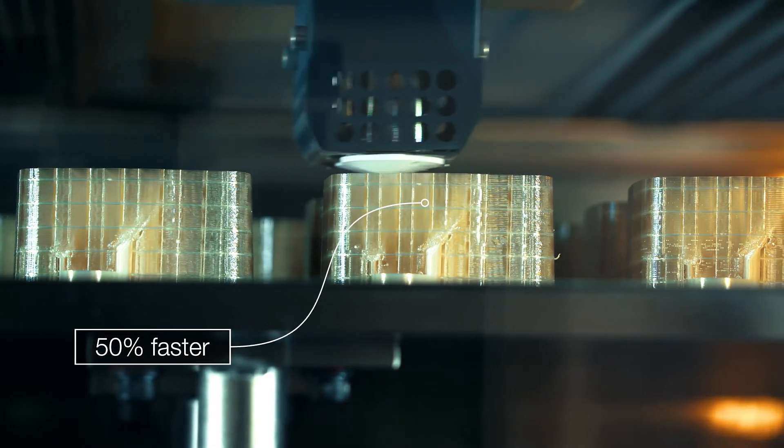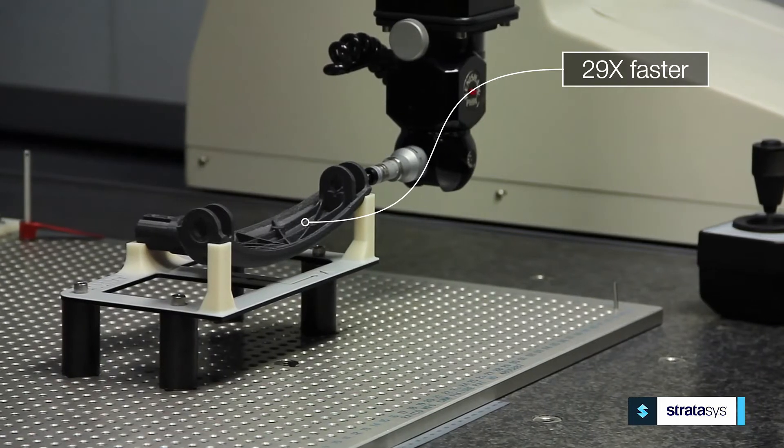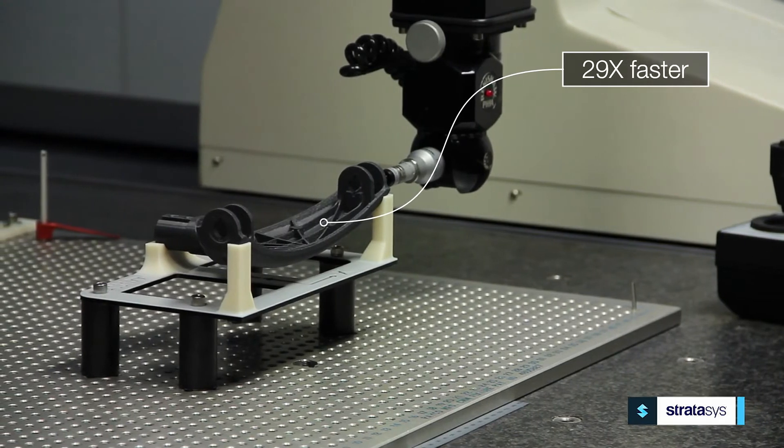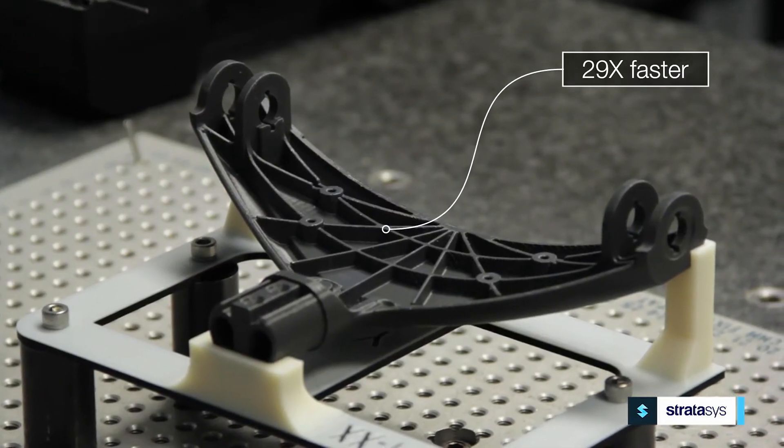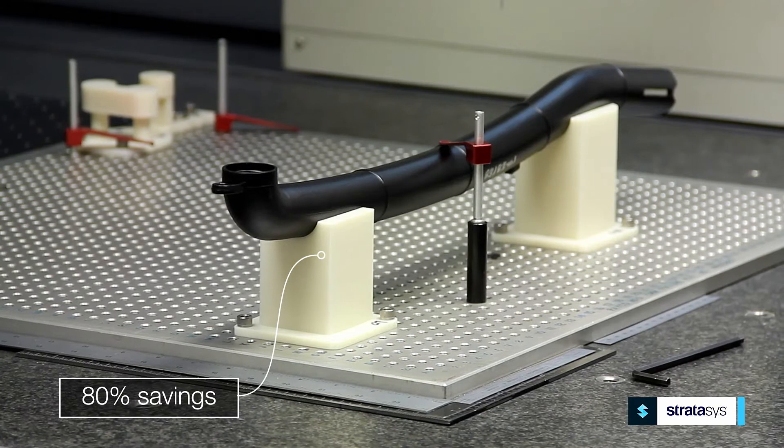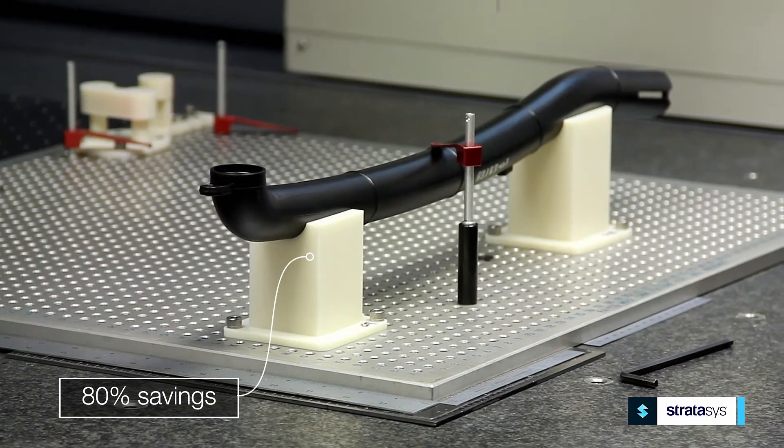Including 50% reduction in production time of the actual fixture, 29 times faster inspection speed when actually performing the inspections, and up to 80% cost savings overall once they had produced the fixtures.